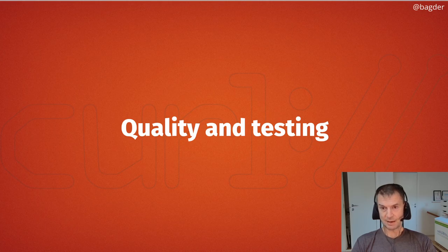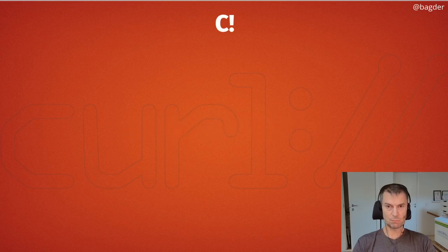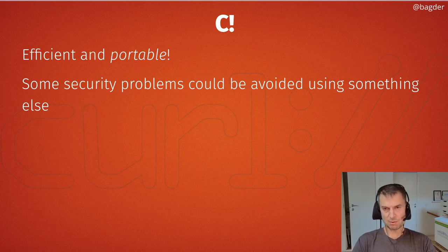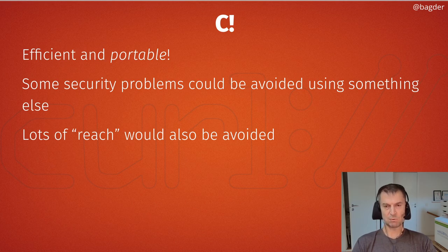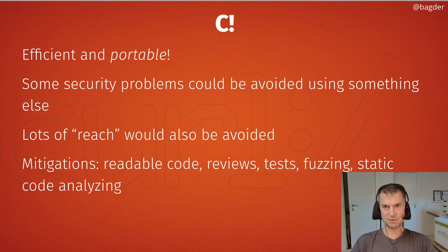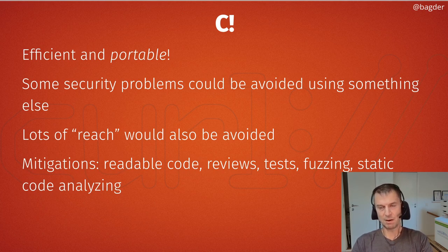On quality and testing: all the product code is written in C — very efficient and very portable, which is why we can reach all those 86 operating systems on 22 CPU architectures. Some security problems could be avoided with a more memory-safe language, but we'd seriously cut off a huge portion of supported systems. Our mitigations include writing readable code, code standards, reviews, testing, fuzzing, static code analysis, and occasional audits.